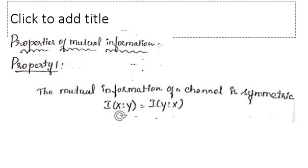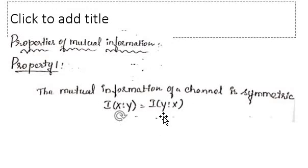The first property is that mutual information of any channel is symmetric. That is, i(x, y) = i(y, x). So it is interchangeable — the mutual information of a channel is always symmetric.